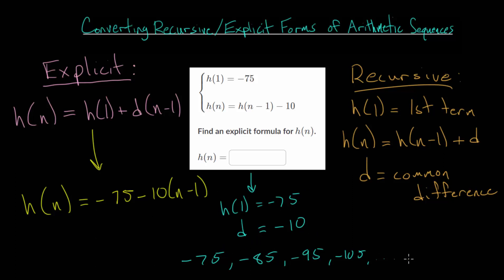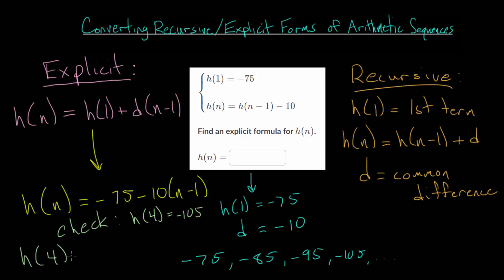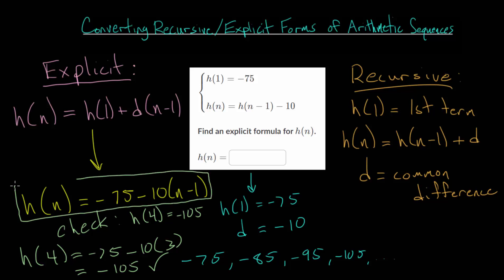It's beneficial to write out the whole sequence so that we can check this. We know the fourth term should be minus 105, so h of 4 should be minus 105. Plugging 4 in for n: h of 4 equals minus 75, then subtract 10 times 4 minus 1, which is 3 times — so subtract 30. Minus 75 minus 30 is minus 105. Since we got back the correct fourth term, we can feel confident this explicit formula is correct and put it in the box.